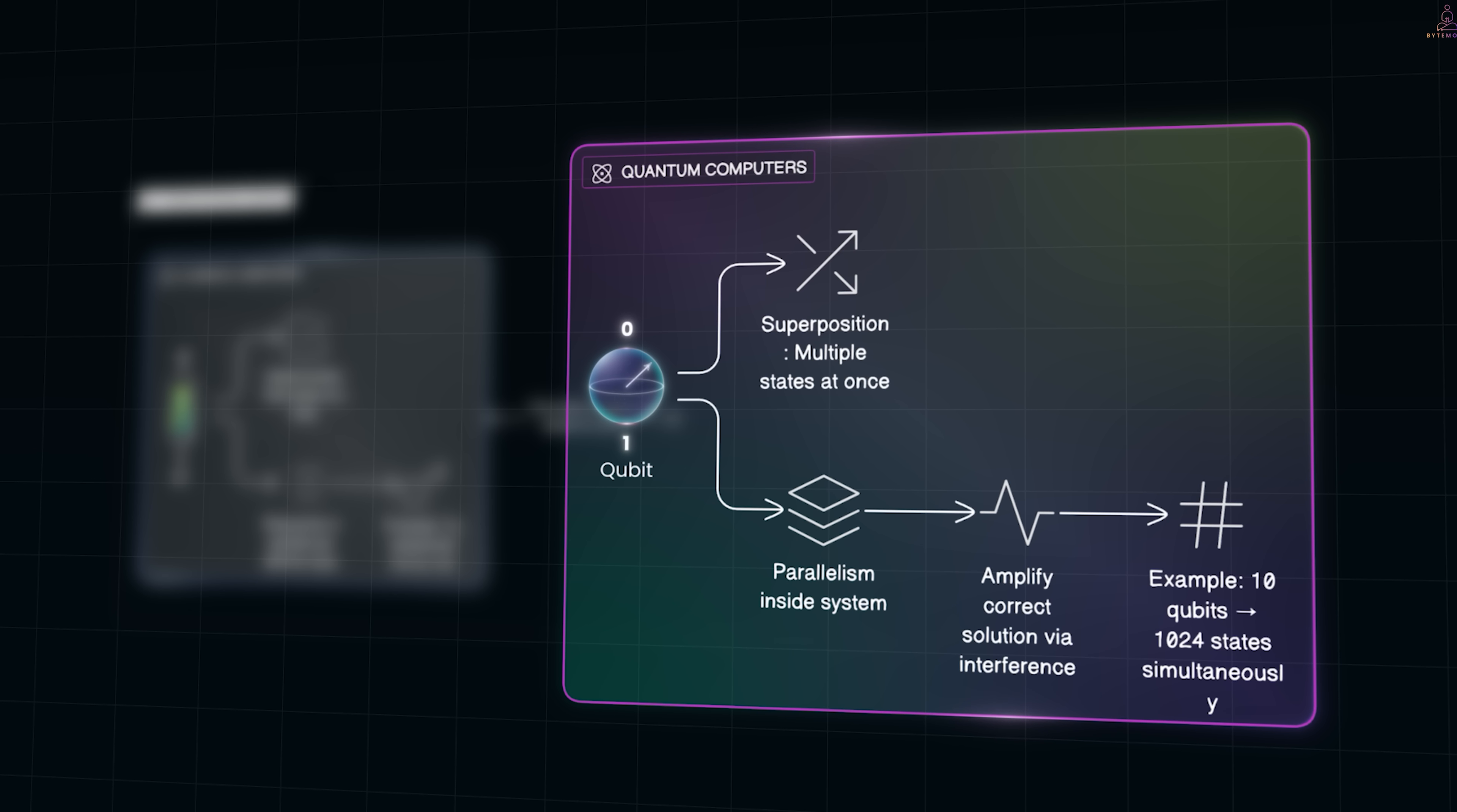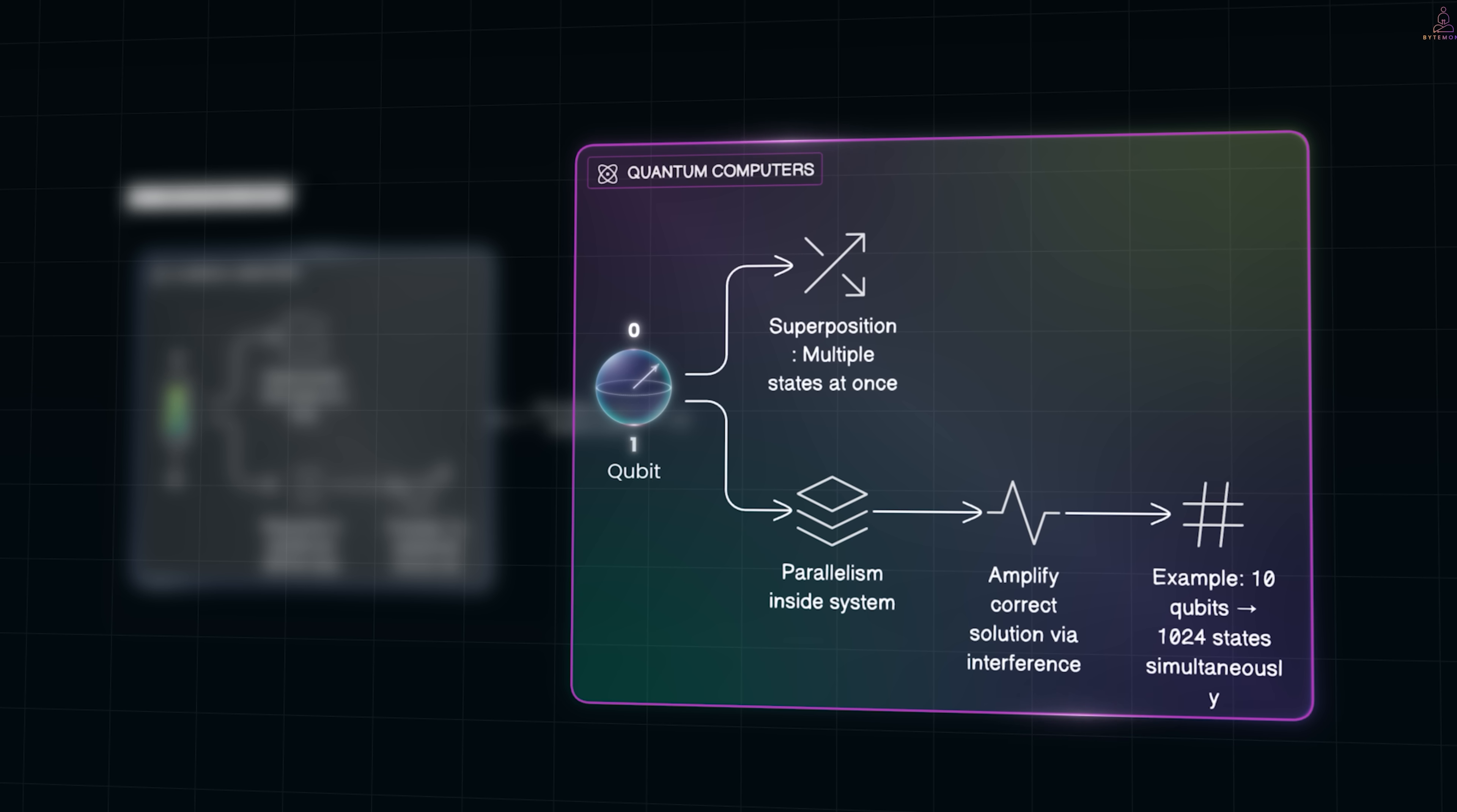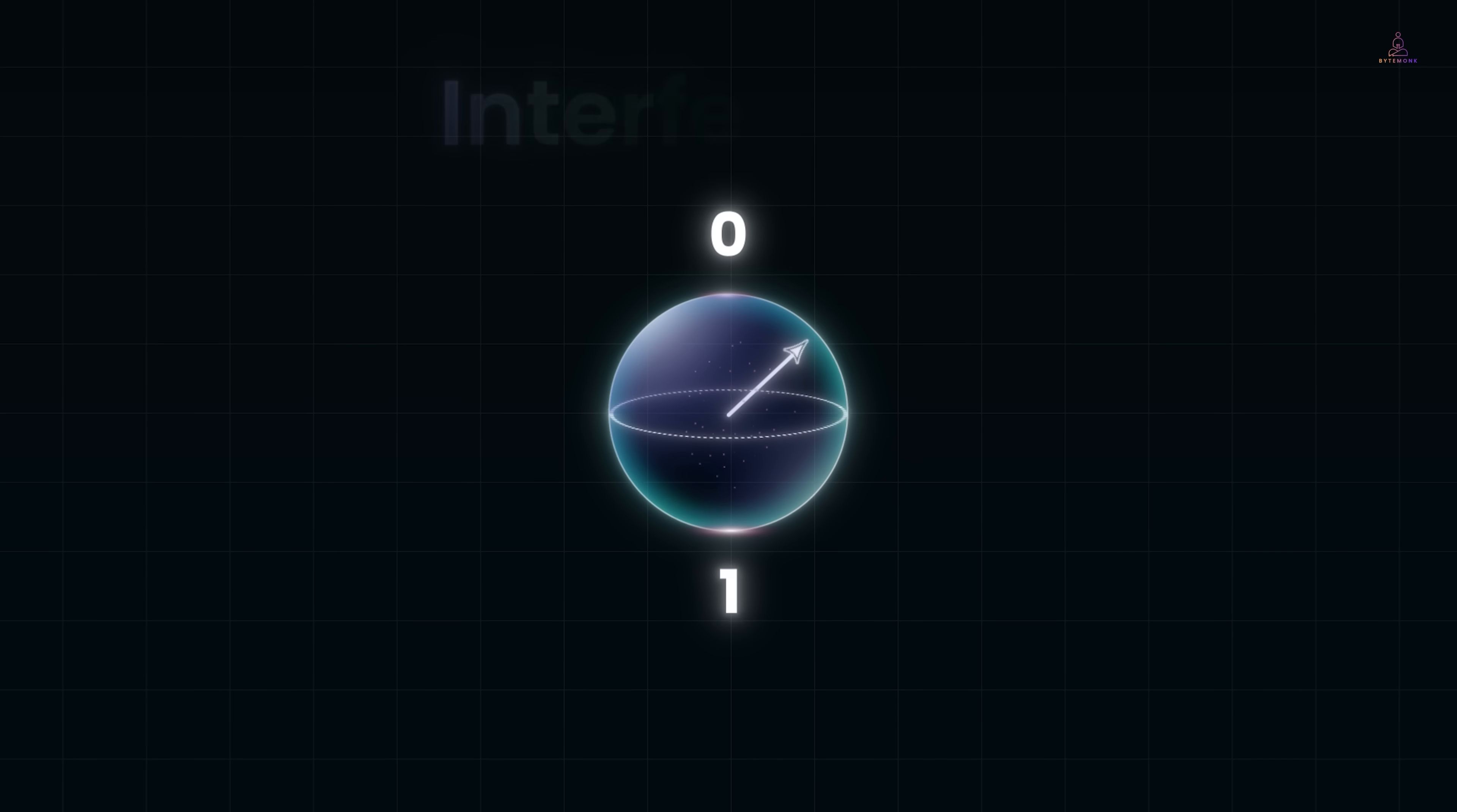Now in a quantum computer, because each qubit can represent multiple possibilities at once, it's like tossing all of those coins in parallel inside a single system. A qubit in superposition doesn't choose 0 or 1 until you measure it. While it's unmeasured, it mathematically holds both options at once, weighted by probabilities. With multiple qubits, you can represent a superposition of many combinations simultaneously. This explosion of states means a quantum computer can process all of those possibilities in parallel inside the same system. Quantum algorithms then manipulate these probabilities through interference, so that when you finally measure, the chance of hitting the correct solution is amplified.